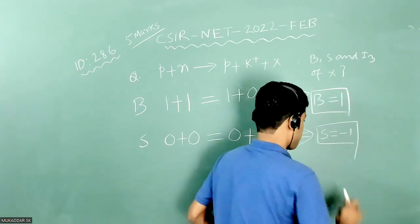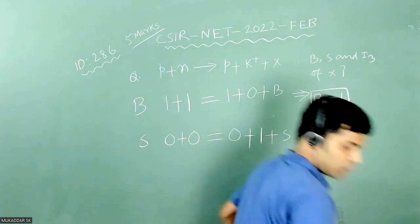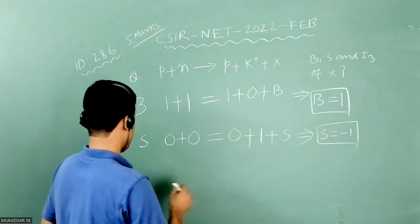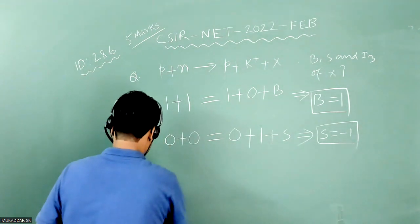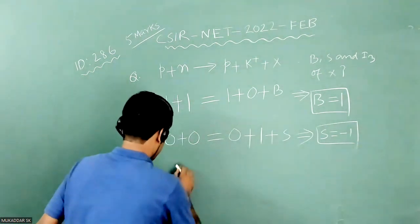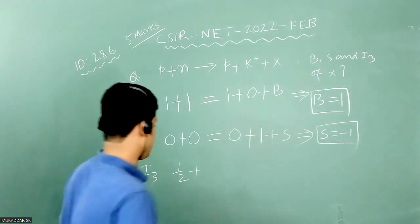Lastly, we will apply third component of isospin conservation for this reaction. So i3 component of proton is plus half. But for neutron it is minus half.